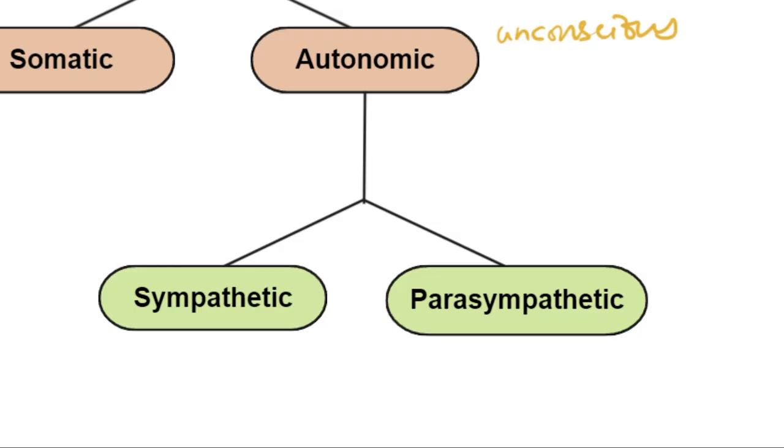Sympathetic is referring to any actions that are causing an increase in activity. For example, in a fight or flight response, your body increases the heart rate to help more blood, glucose, and oxygen to be delivered to your muscles. That is an example of a sympathetic nervous system or sympathetic response.